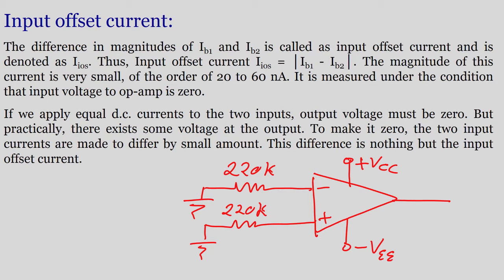The magnitude of the input offset current is very small — on the order of 20 to 60 nanoamperes. It is measured under the condition that the input voltage to the op-amp is zero, meaning both input terminals are grounded.